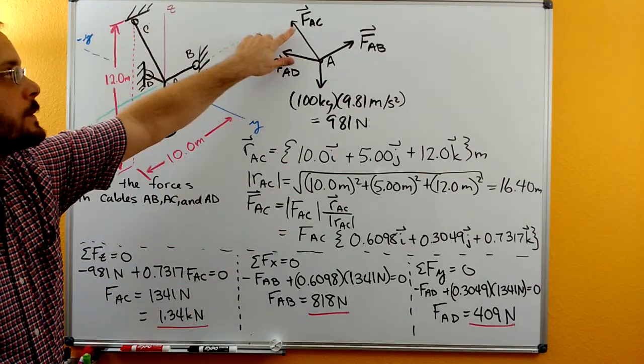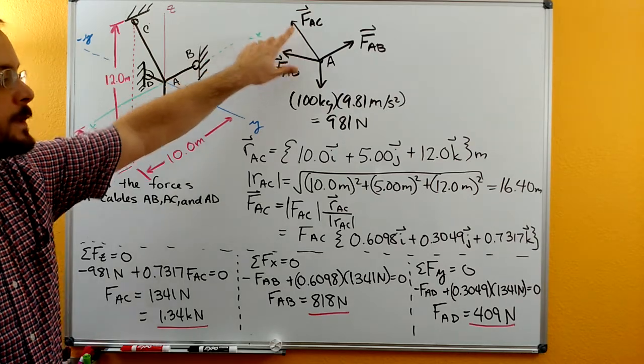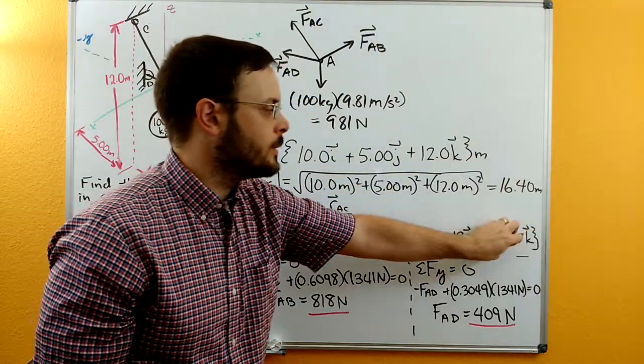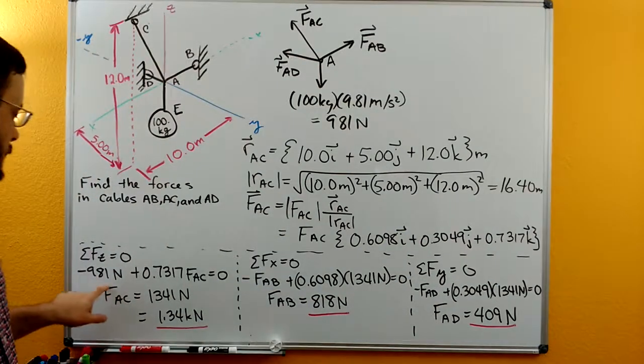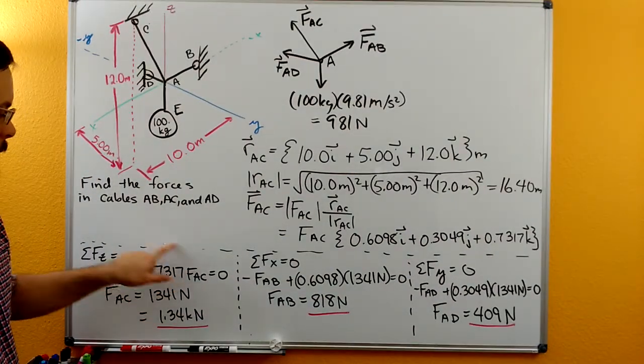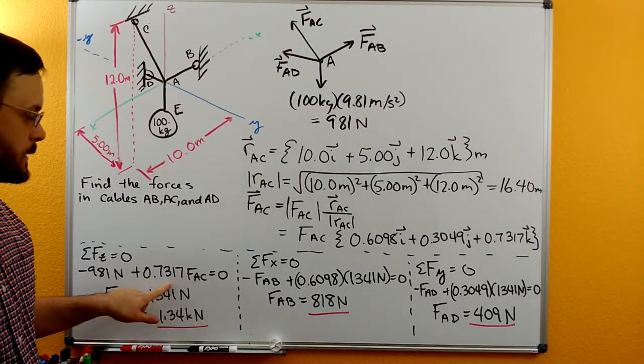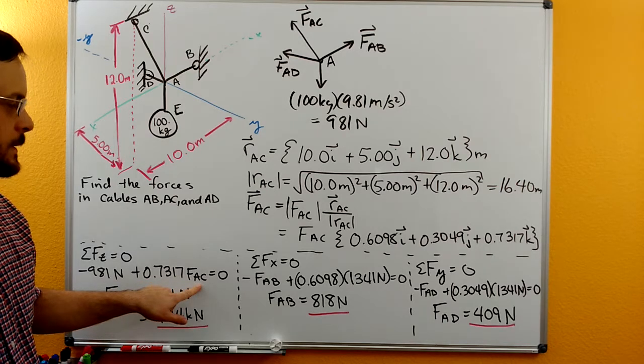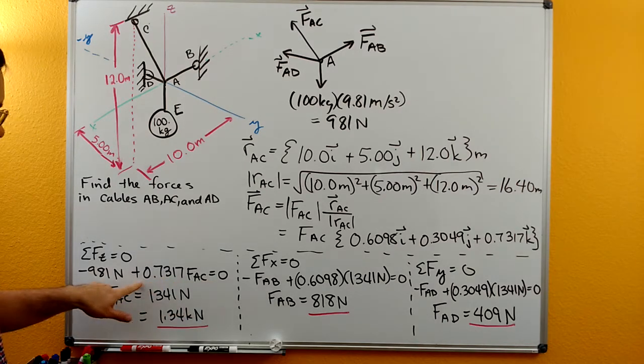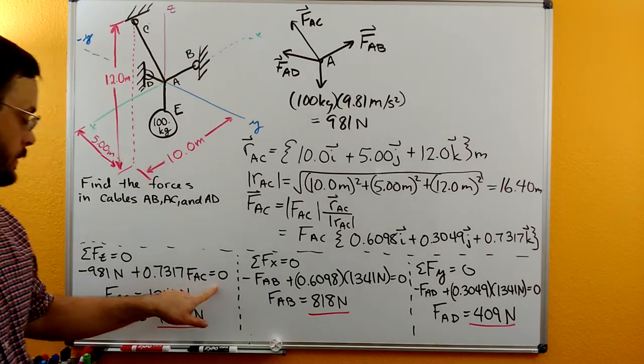We do need to get the Z component though for FAC. So we'll come here and we'll grab what's in front of K and then we'll do this 0.7317 what was in front of K times FAC.